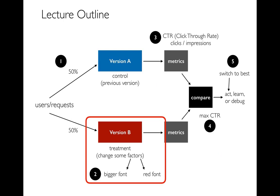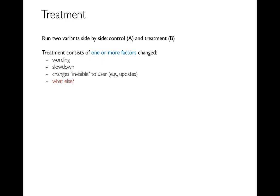Let's talk about treatment — what exactly are we changing in version B? Are we making a font bigger, a different color, whatever? We're always going to be running two variants side by side: one we call the control or A, and then the treatment or B. Both consist of one or more factors that we changed — that could be changing the wording, or maybe introducing slowdown. Nobody thinks slowdown is going to make things better, but this is to learn something: if we make our website faster, will that turn into money eventually? People might intentionally slow it down for B users just to see what happens. There might also be changes invisible to the user, like backend updates.